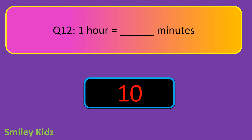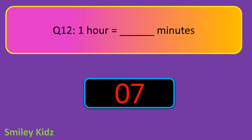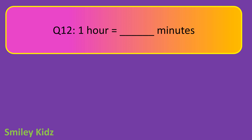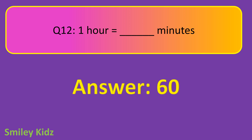Question number 12. One hour is equal to dash minutes. Your time starts now. And your time is up. The right answer is 60. One hour is equal to 60 minutes.